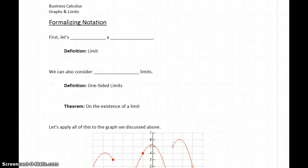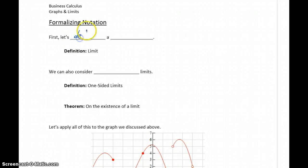We've talked informally about limits as this idea of describing the behavior of a graph, looking at what's happening around some specific x value. Now we want to start to formalize that a little bit, introduce some notation and some definition. So first, let's actually define what we mean by a limit.